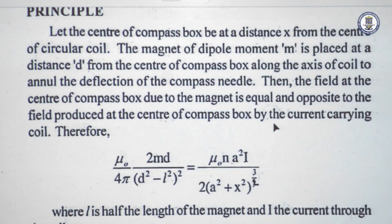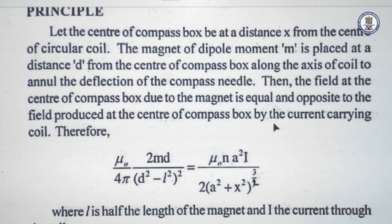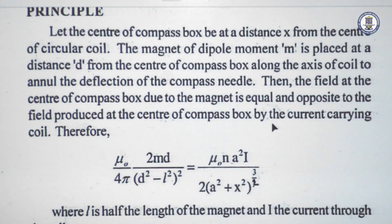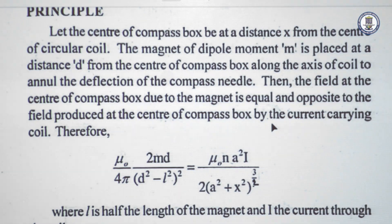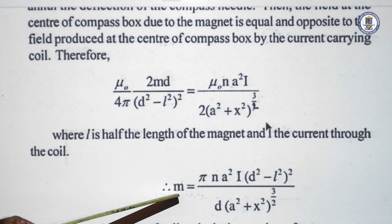This magnetic field at that particular point is nullified with the help of a bar magnet placed along the axis of the circular coil, so that the field produced by the bar magnet along its axial line is mu-zero over four-pi times two-m-d divided by (d-squared minus l-squared) all squared. When the compass box placed at distance x shows zero deflection, both fields are nullified and we can equate these two expressions.